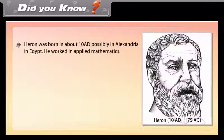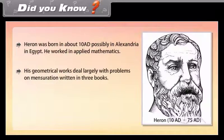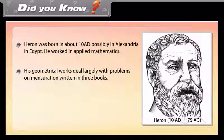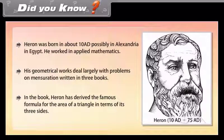Did you know? Heron was born possibly in Alexandria in Egypt. He worked in applied mathematics. His geometrical works deal largely with problems on mensuration, written in three books. In one book, Heron derived the famous formula for the area of a triangle in terms of its three sides.